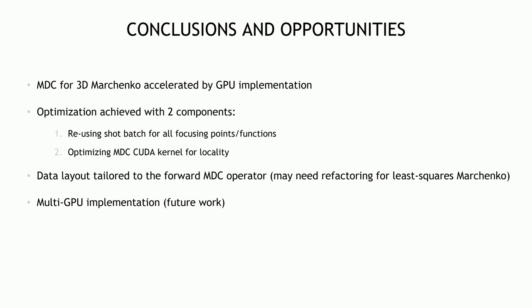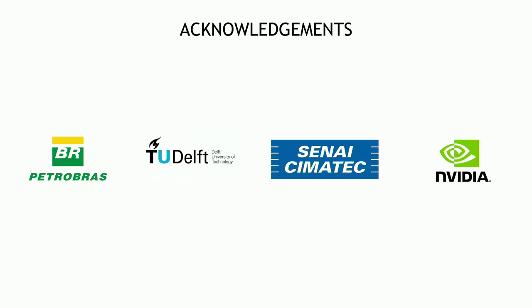In conclusion, we optimized 3D Marchenko on a single GPU with two main components: first, reusing the shot batch across all focusing points and functions; second, optimizing the CUDA kernels at a lower level to leverage memory locality. Future work includes adapting the data layout and adjoint operator for least-squares Marchenko, and multi-GPU implementation. We'd like to thank the Ken Kennedy Institute, Petrobras for sponsoring the project, TU Delft, Senai Simatec — who did most of the work — and NVIDIA. Thank you.